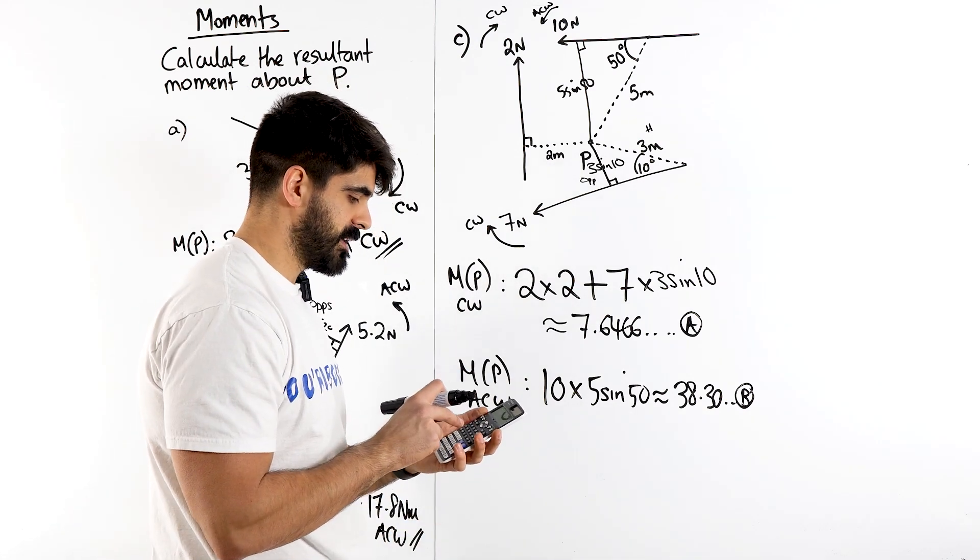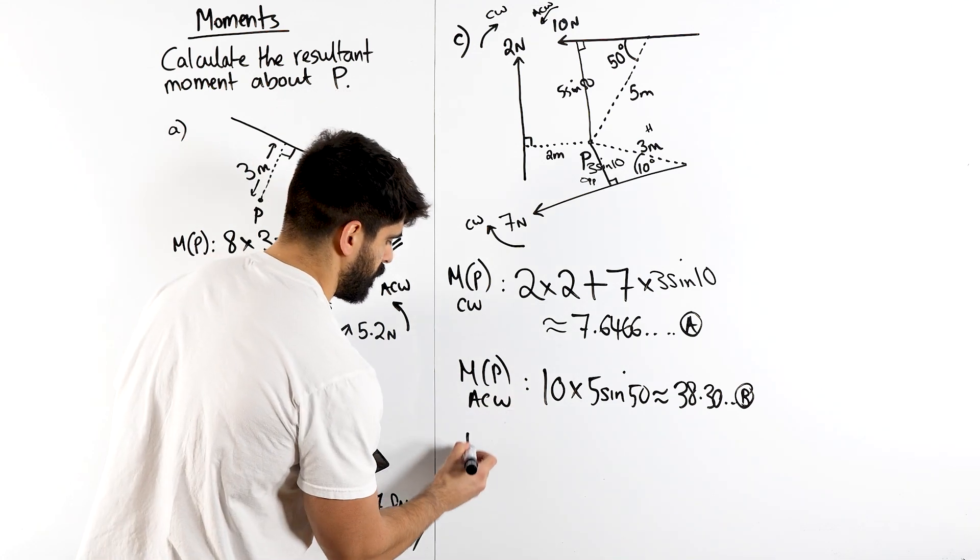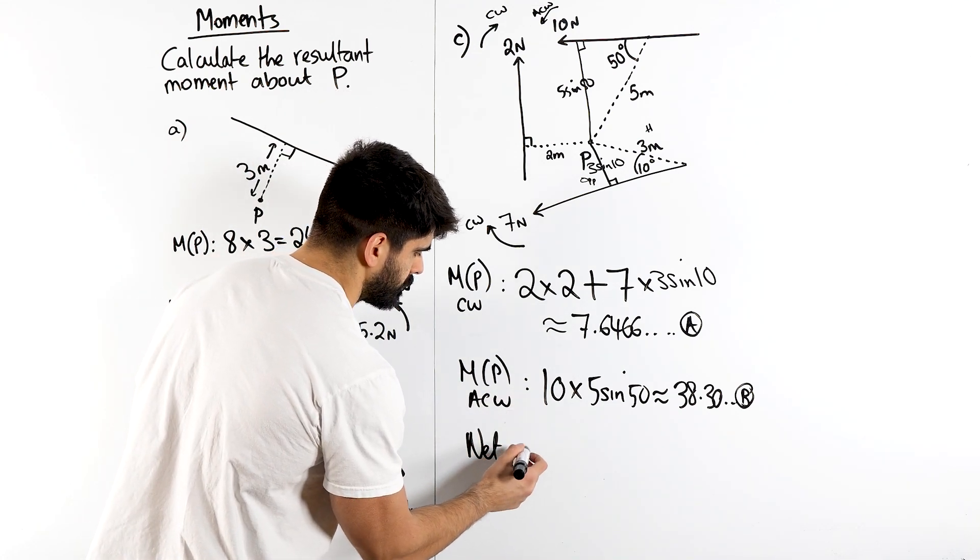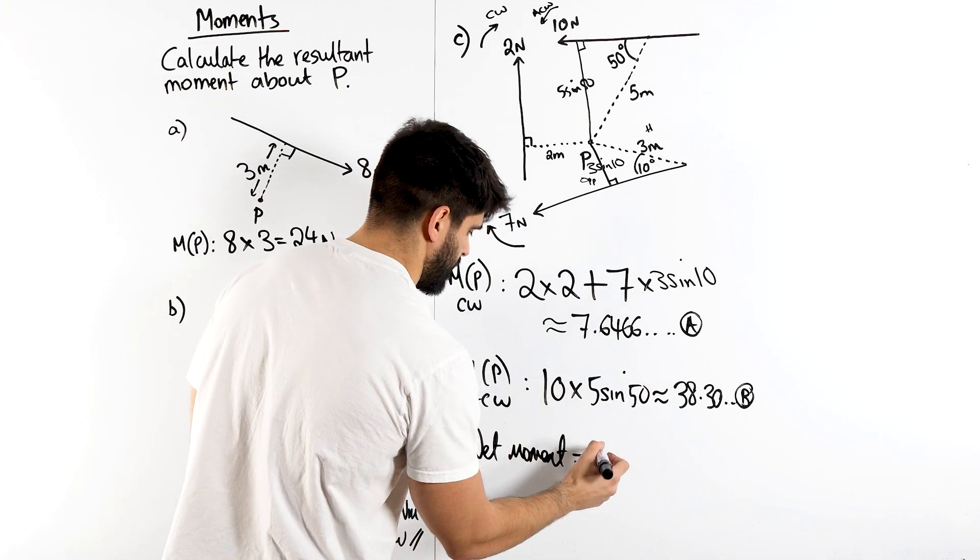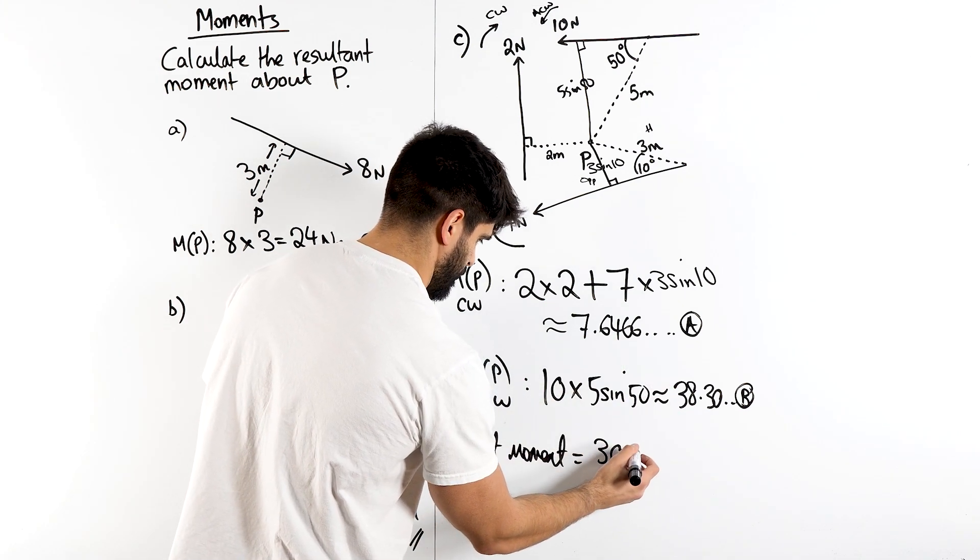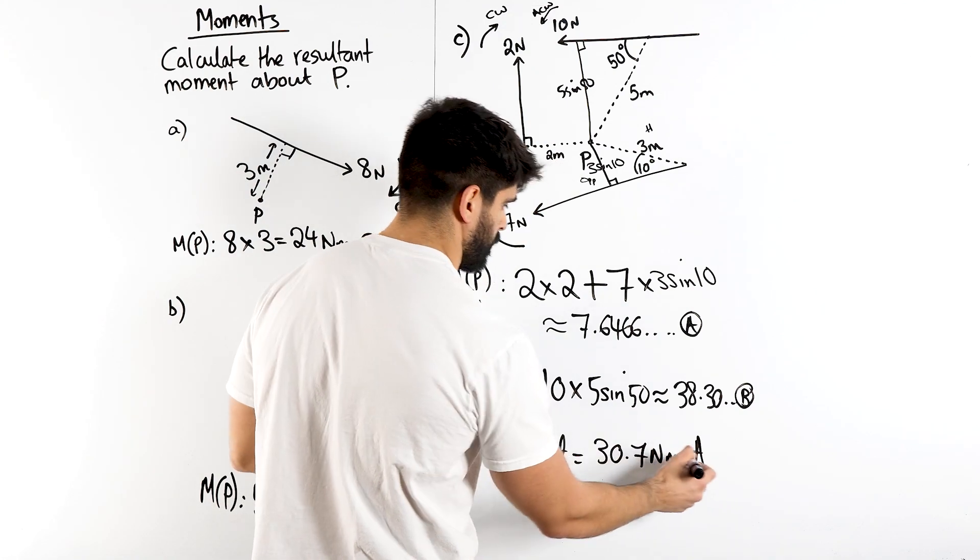So storing that as B, we're going to do alpha B minus alpha A. So my net moment is going to be this minus this, which is 30.7 Nm anti-clockwise.